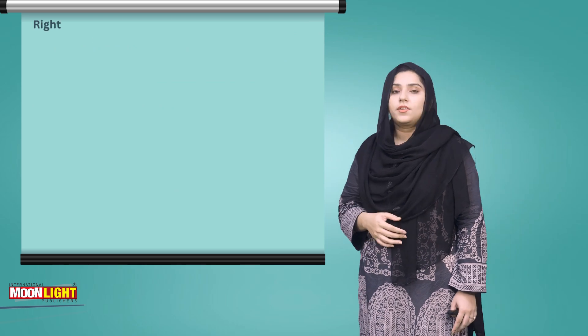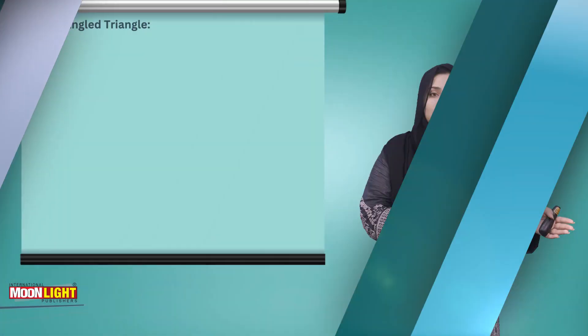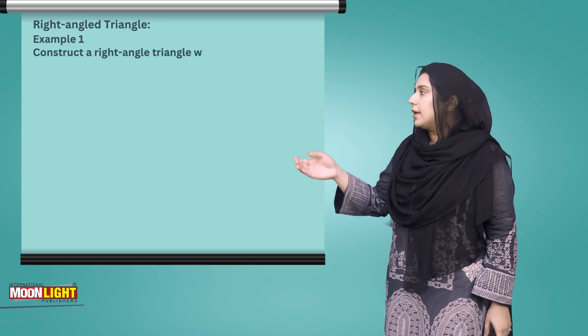Now, come to the right angle triangle. In a right angle triangle, you should have one angle of 90 degrees. So, what do you do? First of all...